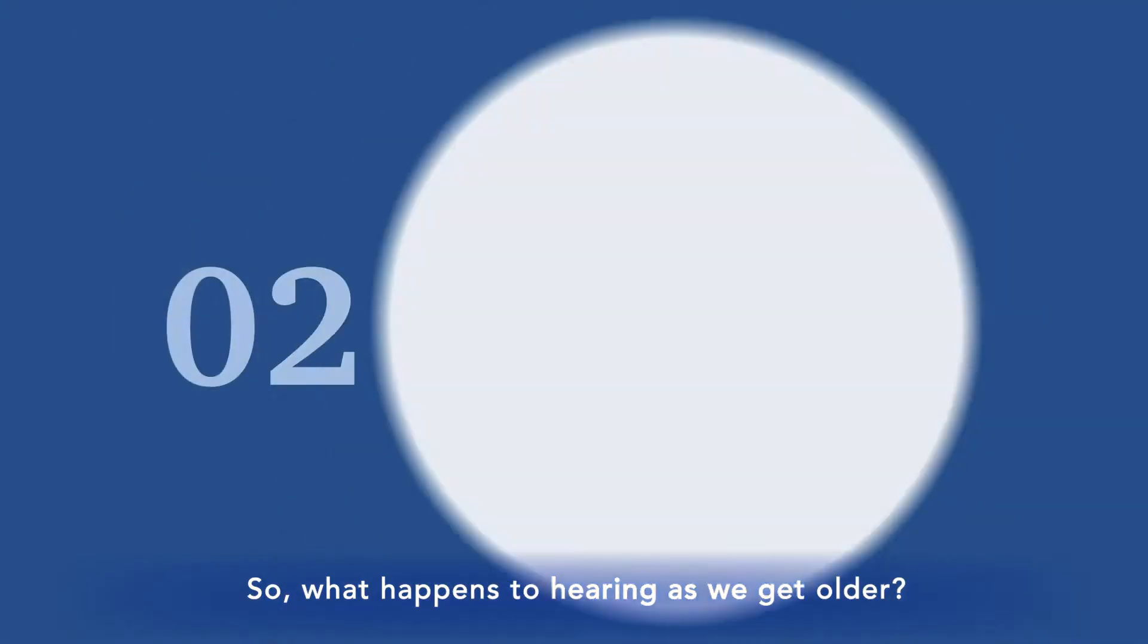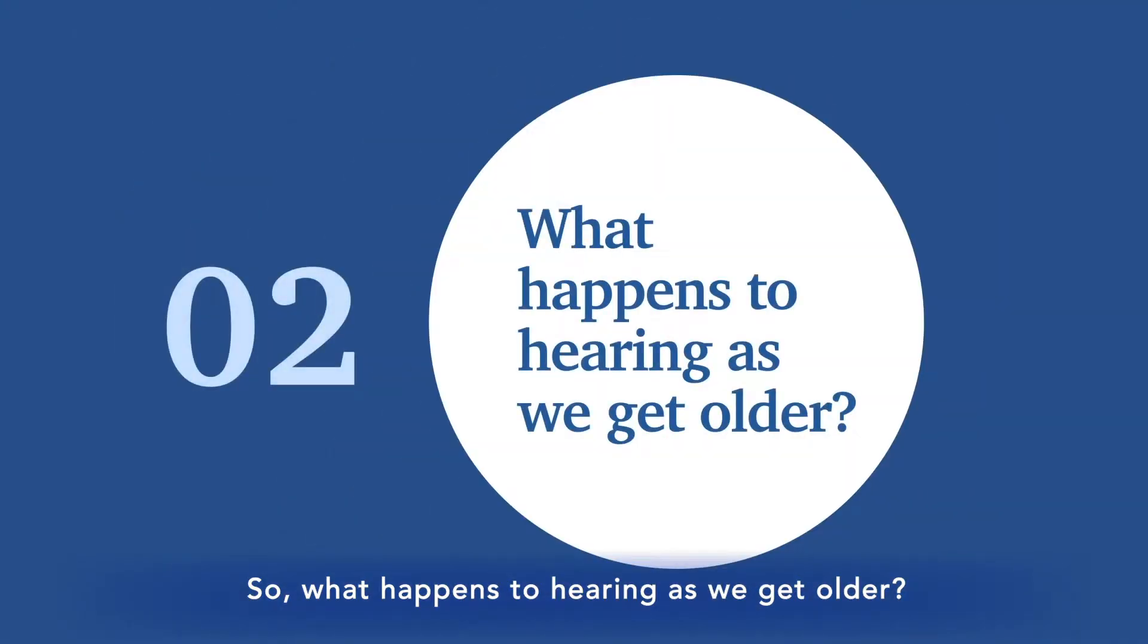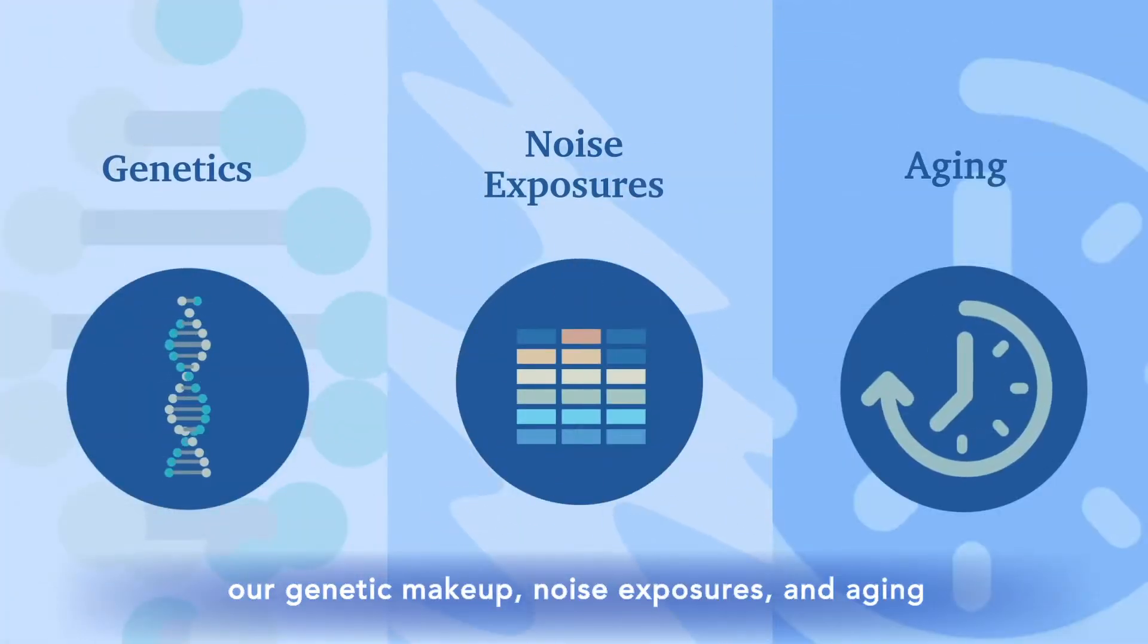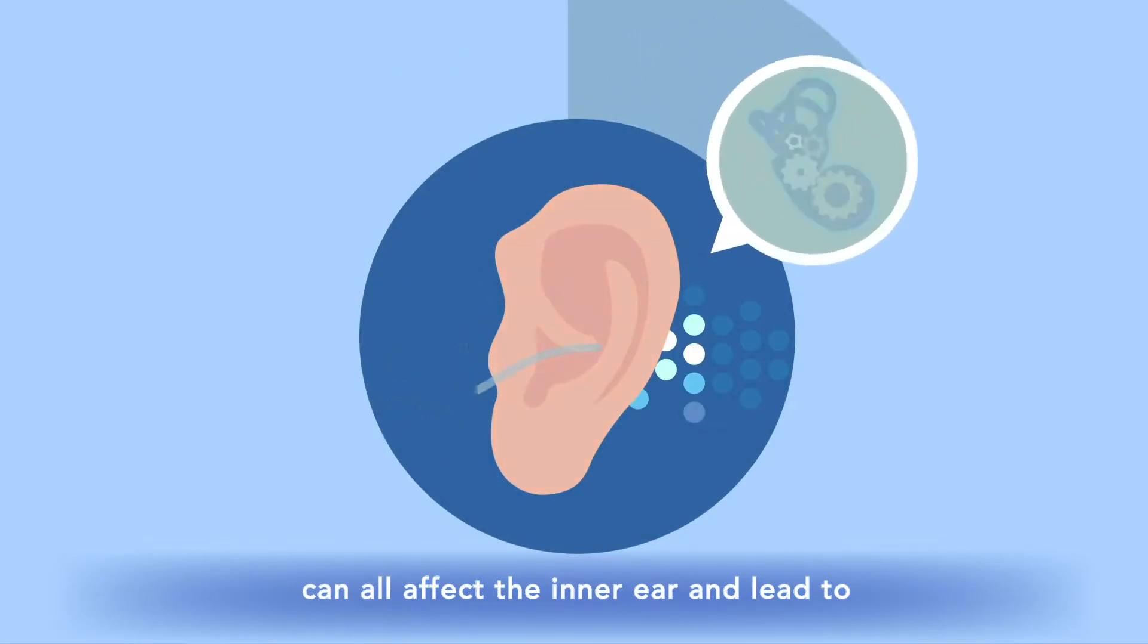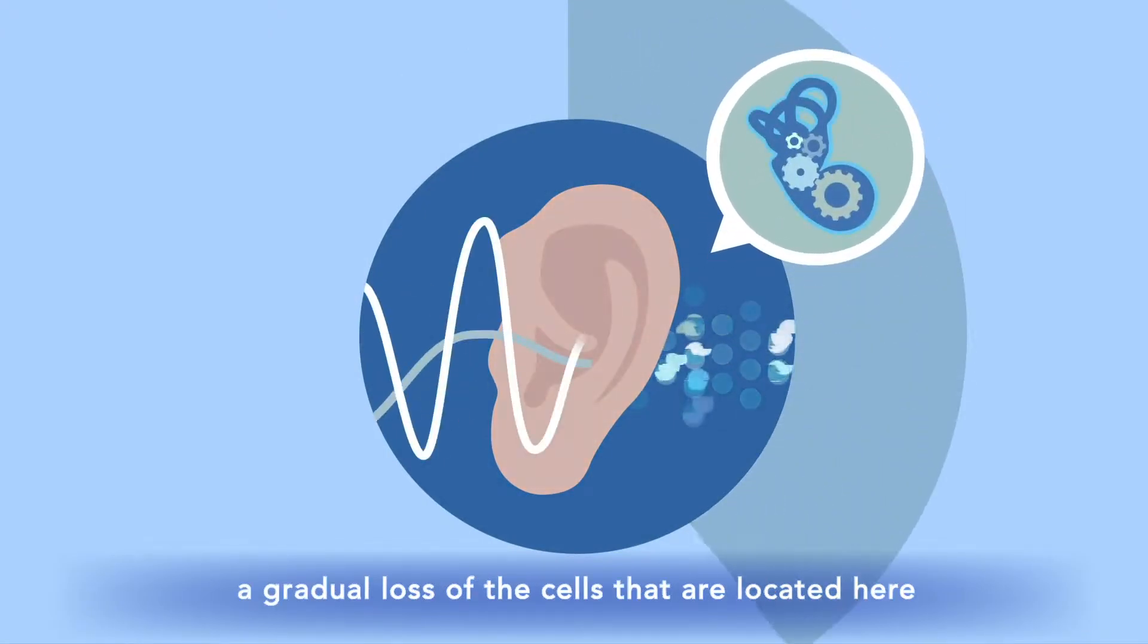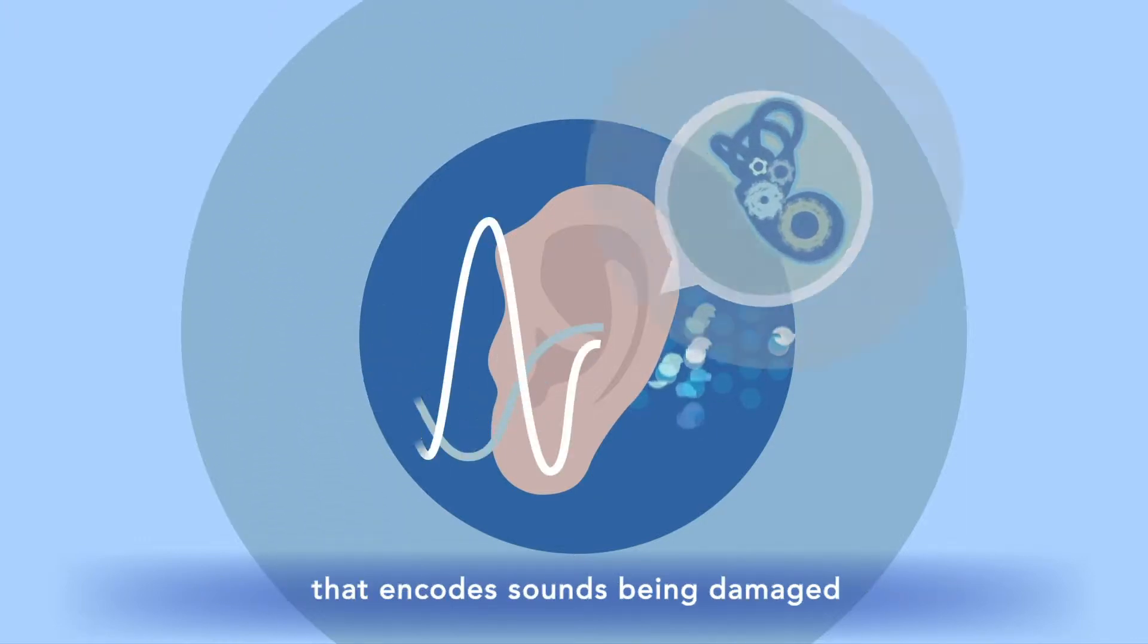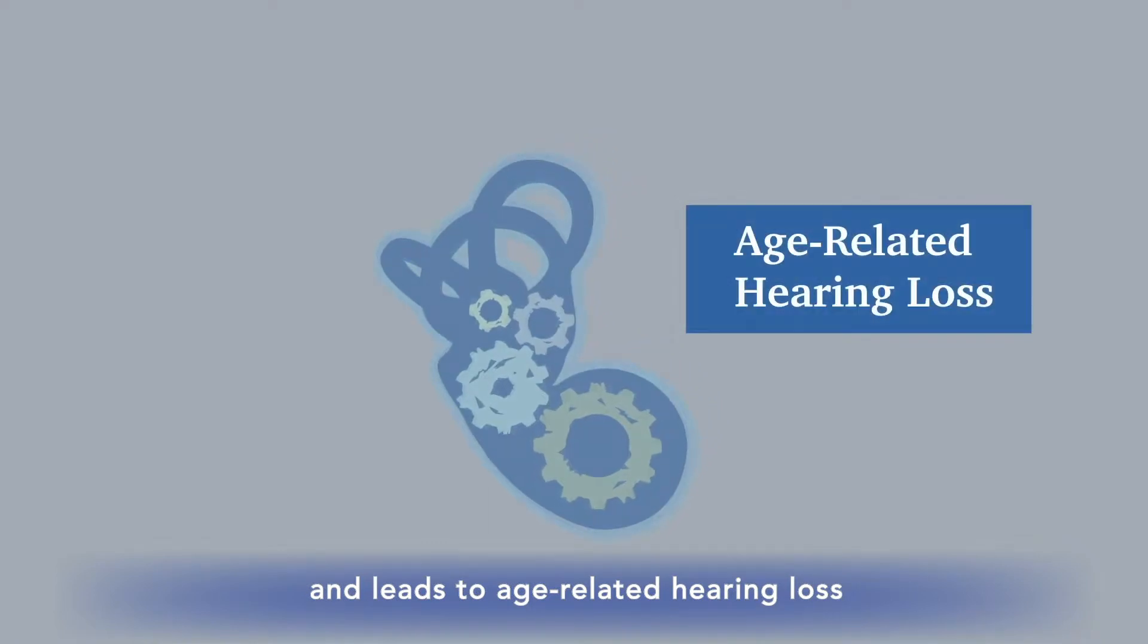So what happens to hearing as we get older? Over a lifetime, our genetic makeup, noise exposures, and aging can all affect the inner ear and lead to a gradual loss of the cells that are located here. This process results in the machinery of the inner ear that encodes sound being damaged and leads to age-related hearing loss.